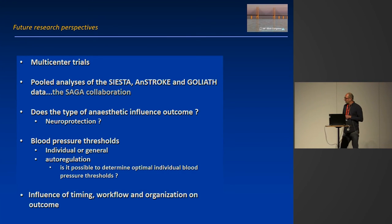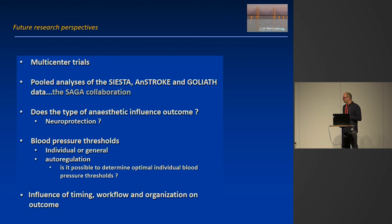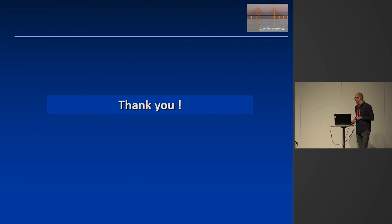Looking at future research perspectives: we need multi-center trials, and we need pooled analysis of the data from the three studies just presented. We need to see whether the type of anesthetic influences outcome, and we need to look at blood pressure thresholds — possibly individualizing blood pressure targets for each patient using continuous blood pressure monitoring and autoregulation monitoring. We also need to examine the influence of timing, workflow, and organization on outcome. Thank you.